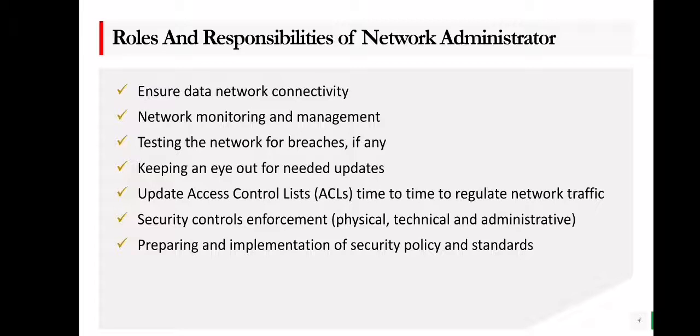An access control list is a table that tells a computer operating system which access rights each user has to a particular system object, such as a file directory or an individual file. Next, we have security control enforcement. There are three security controls: physical, technical, or administrative.